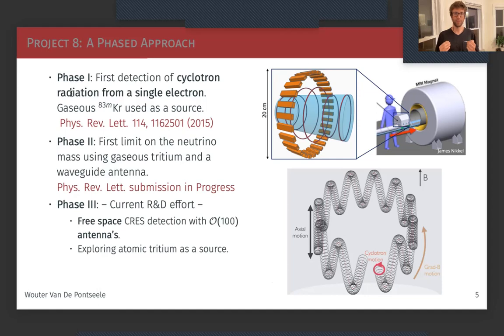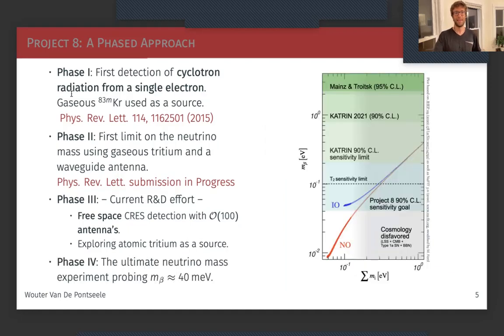In phase three, we have two current R&D efforts that want to improve these results. One is going to free space so that we can scale this effort, which comes with difficulties such as the motion will not be circular anymore but more complicated. Secondly, we're also exploring atomic tritium as a source because we understand the connection between these electrons and the neutrino mass even better, leading to higher sensitivity. Then in phase four, we hope to put all of these together for an ultimate unambiguous determination of the electron neutrino mass.